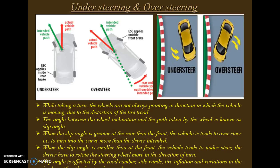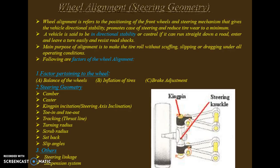Slip angle is affected by road camber, side winds, tire inflation, and variations in load on front and rear axles. Wheel alignment refers to the positioning of the front wheels and steering mechanism that gives the vehicle directional stability, promotes ease of steering, and reduces tire wear. A vehicle is said to have directional stability if it can run straight, enter and leave a turn easily, and absorb road shocks.